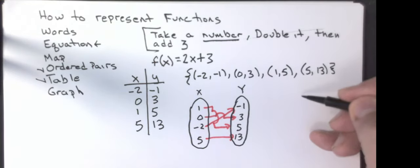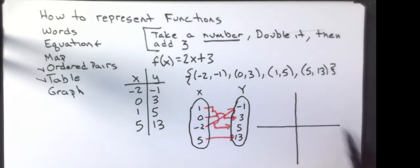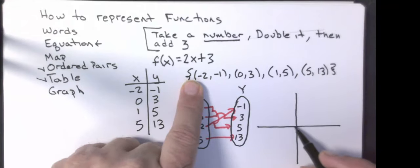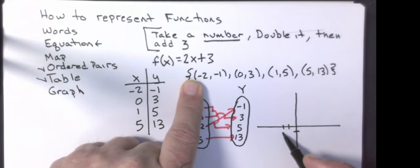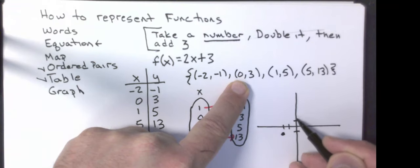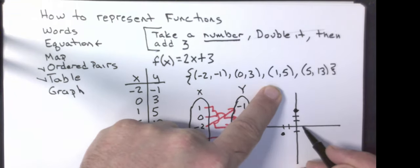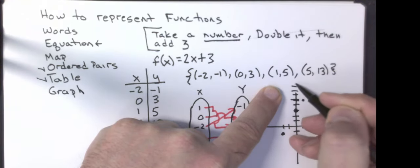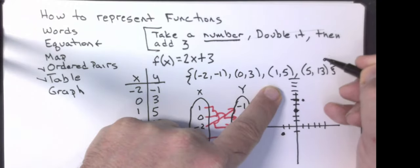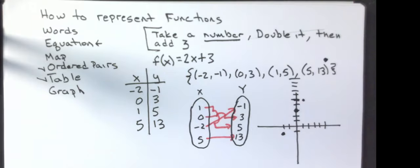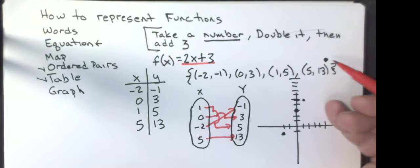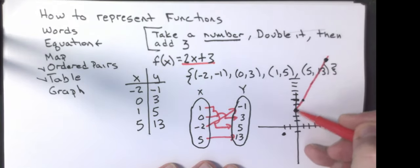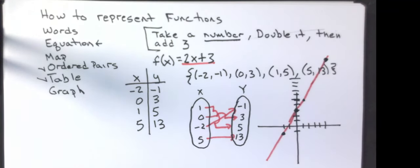The last representation is a graph. I'll plot the points: (negative 2, negative 1), (0, 3), (1, 5), and (5, 13). We should know this function is linear from what we've talked about before, which means if I were to connect the dots I would get a straight line. On an actual sheet of graph paper that would be clearly visible as a straight line.